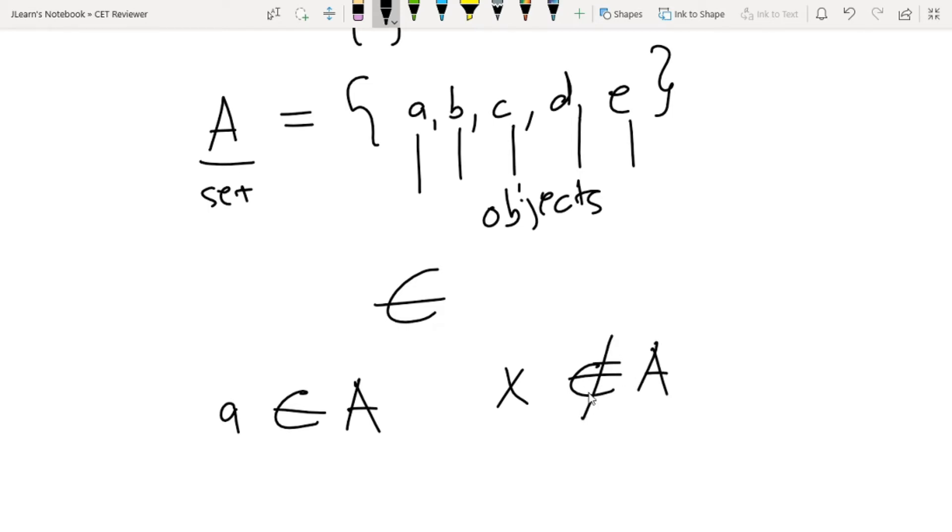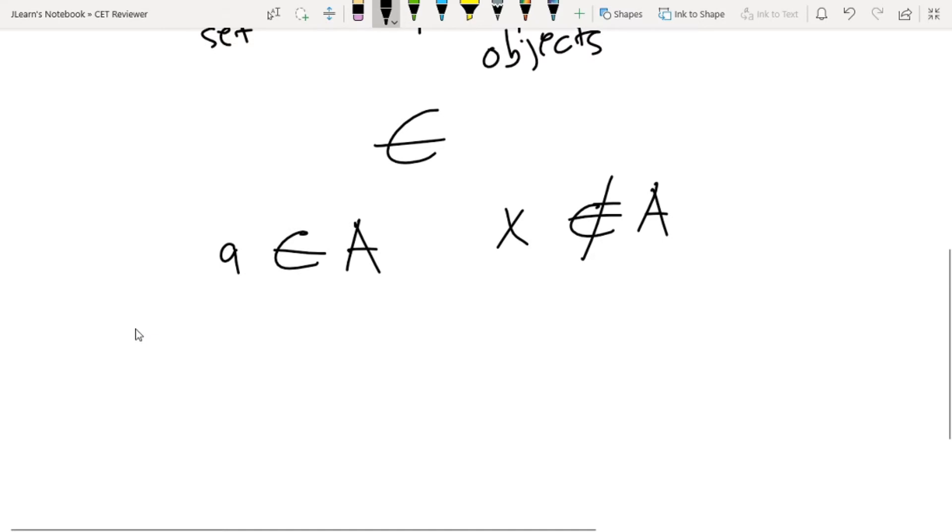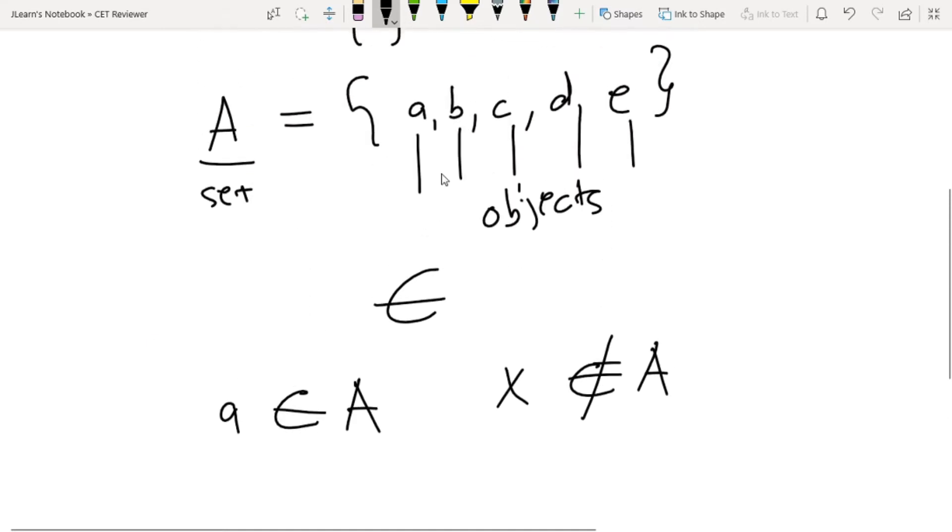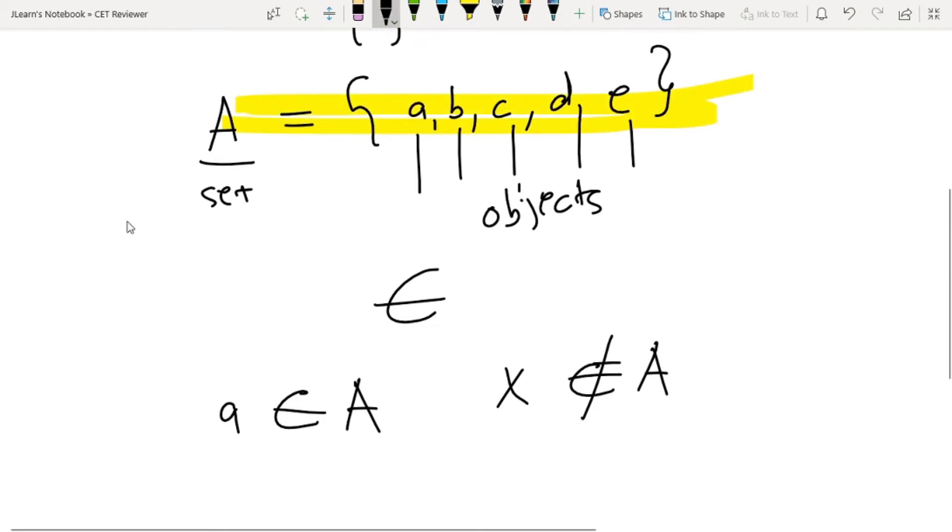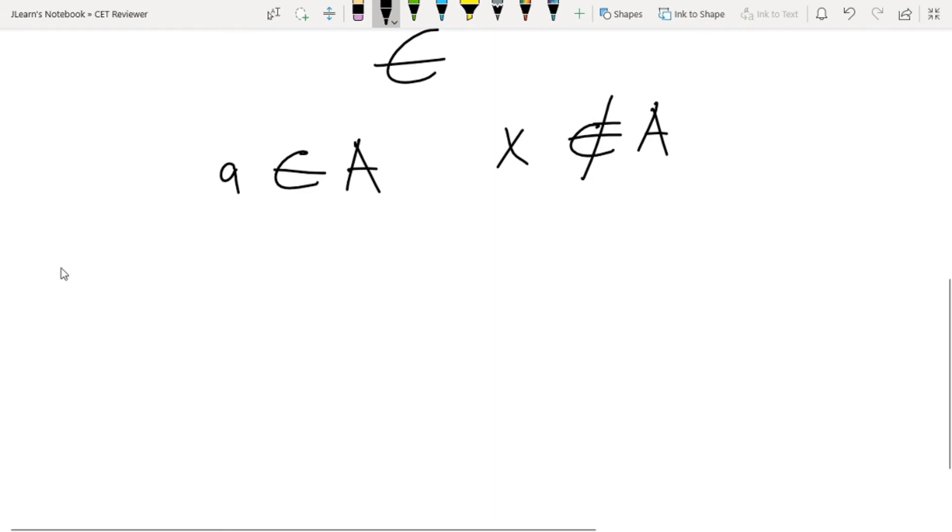We represent 'is not' by putting a slash through the symbol. That's the basic definition of a set. Now, how do we define sets? Actually I already taught you one method of defining sets. Let's go through them one by one. Set notations.